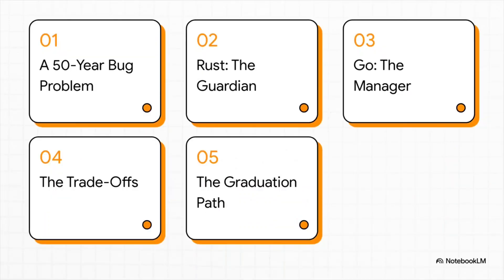Here's the game plan. First, we're going to rewind a bit and look at a problem that's been bugging software for like 50 years. Then we'll introduce our two contenders: Rust, the super strict guardian, and Go, the laid-back manager. We'll see how they stack up, look at the trade-offs, and wrap up with a really interesting trend that's happening right now.